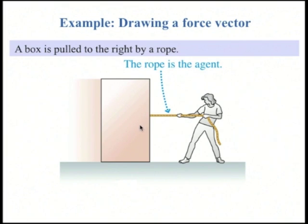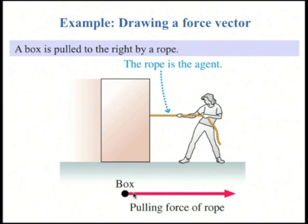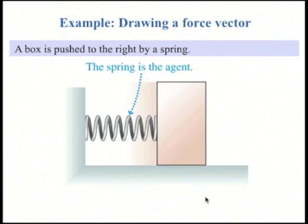Example: a box is pulled to the right by a rope. Let's draw the force vector. First you draw the box as a dot, then you draw the force vector going towards the right, away from the box dot.